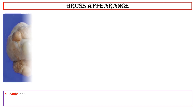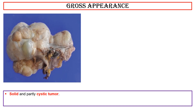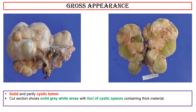Gross appearance: This photo shows a solid and partly cystic tumor. Cut section shows solid gray-white areas with foci of cystic spaces containing thick material. They may be gritty due to calcification.